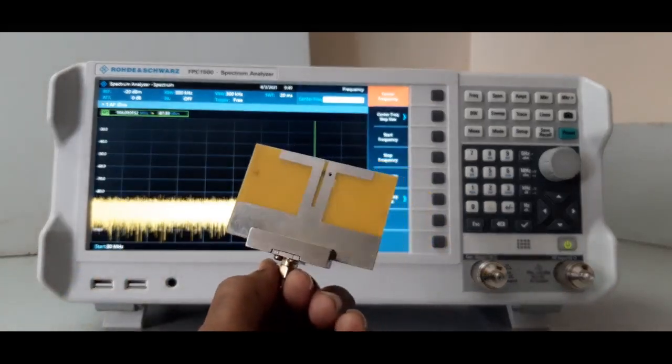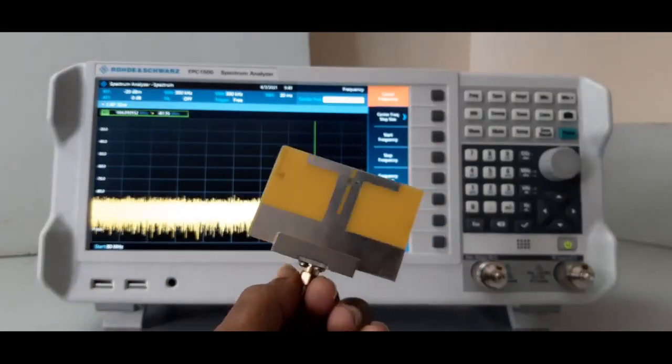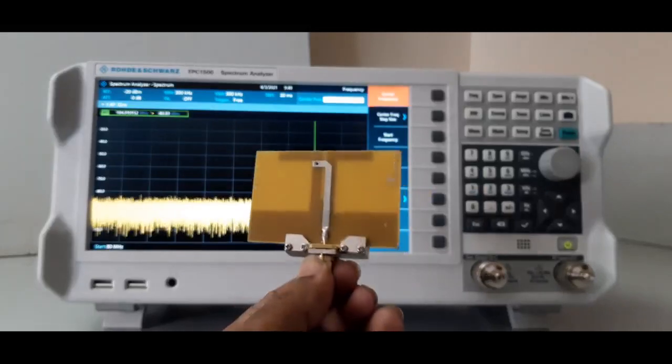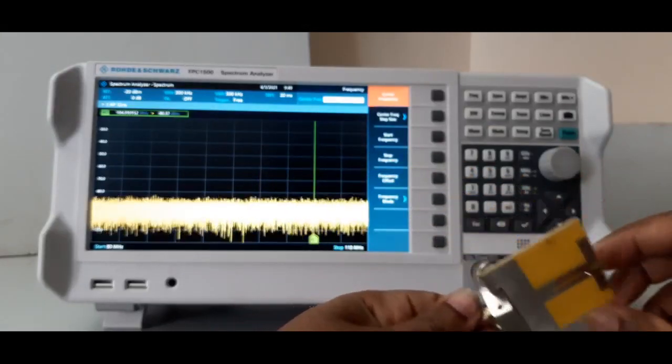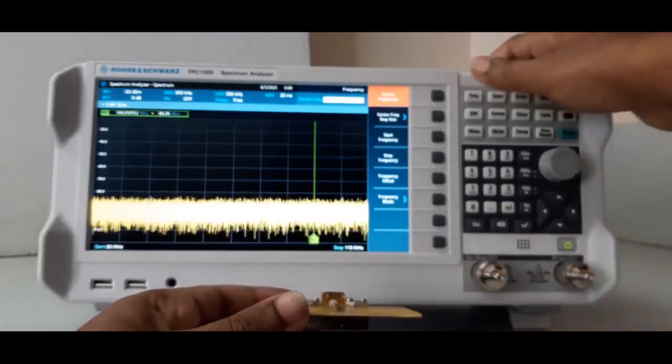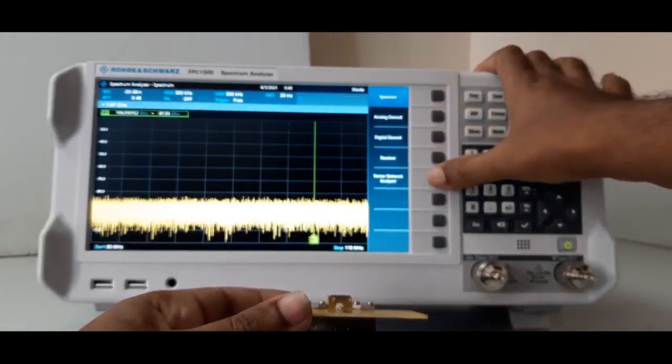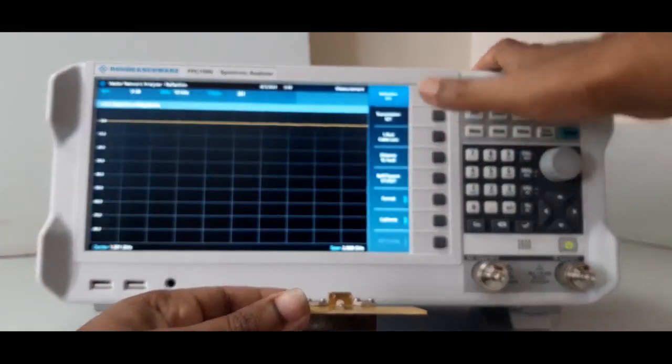Dipole antenna - we are testing return loss, VSWR and impedance, impedance in Smith chart. First you connect your antenna. Before that it is in spectrum, so go to modes and then vector network analyzer. It is booting vector network analyzer.